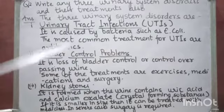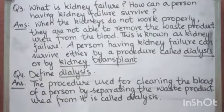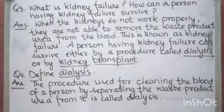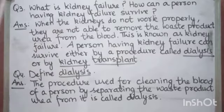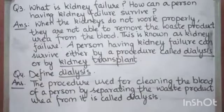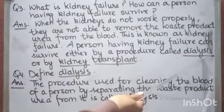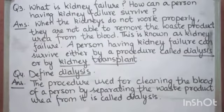These are the three common urinary system disorders. Now, question number 3 is: what is kidney failure and how can a person having kidney failure survive? We all have a pair of kidneys — two kidneys. If one kidney fails, we can still survive. But if both kidneys fail and do not work properly, they will not be able to remove the waste product urea from the blood — this condition is known as kidney failure. A person having kidney failure can survive either by dialysis or by kidney transplant. Dialysis is the procedure used for cleaning the blood of a person having kidney failure by separating the waste product urea from it.